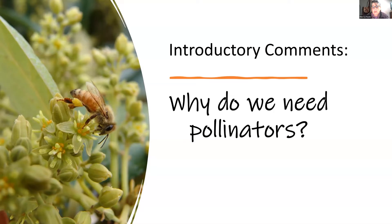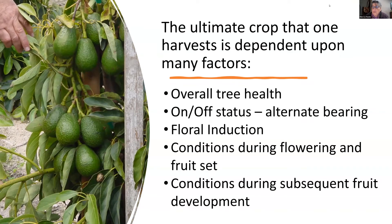I'm going to make a few introductory comments — basically, why do you need pollinators? The ultimate crop we harvest depends on many factors: tree health, alternate bearing status, the ability of the tree to induce flower development, conditions during flowering and fruit set, and conditions that allow fruit to grow and be retained on the tree for harvest. Today we're focusing on conditions during flowering and fruit set.